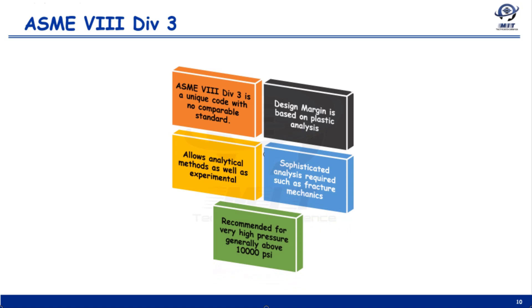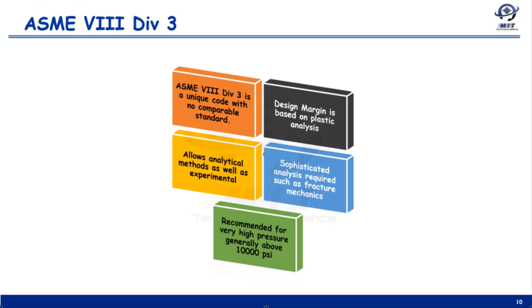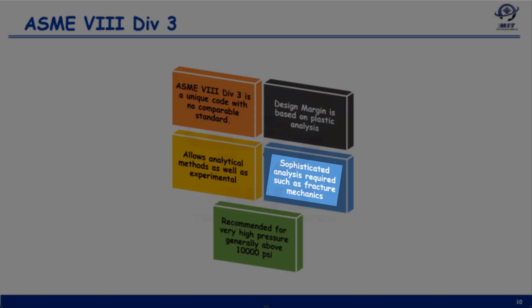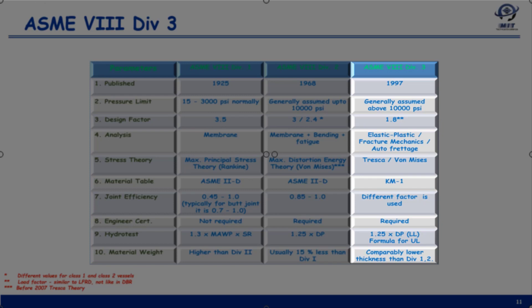Key features of ASME Section 8 Division 3 for very high pressure applications, generally assumed above 10,000 psi: it is a unique code with no comparable standard. The design margin is 1.8, based on plastic analysis. It allows analytical as well as experimental methods. After hydro test it allows complete surface and volumetric examination. Sophisticated analysis is required such as elastic-plastic analysis and fracture mechanics. It is recommended for very high pressures generally above 10,000 psi, but can be utilized for any pressure, although it won't be economical below that range.